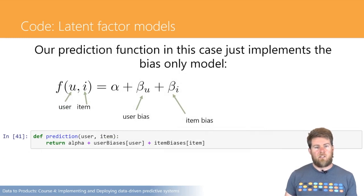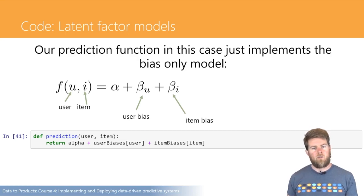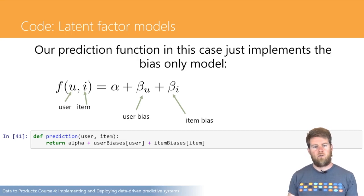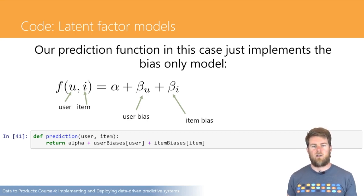The next thing we'd like to do is, given some estimates of those values — some value of alpha, an item bias for each item, and a user bias for each user — how can we actually make a prediction? This prediction function takes just a user and an item and knows about all the values of our offset, user, and item bias terms. It just makes a prediction by adding those three together: the offset term plus the user bias for that user plus the item bias for that item.